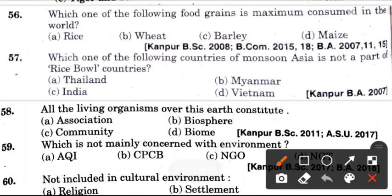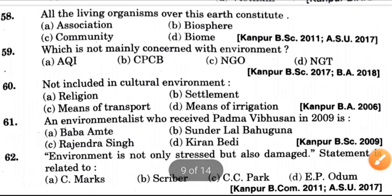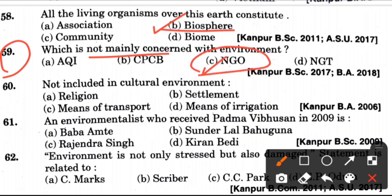Fifty-sixth question: Which one of the following food grain is maximum consumed in the world? Answer is A, which is rice. Next question: Which one of the following countries of monsoon Asia is not a part of rice bowl countries? Answer is B, which is Myanmar. Fifty-eighth question: All the living organisms over this earth constitute? Answer is B, which is biosphere. Which is not mainly concerned with environment? Answer is C, that is NGO. Sixtieth question: Not included in cultural environment? Answer is D, means of irrigation.